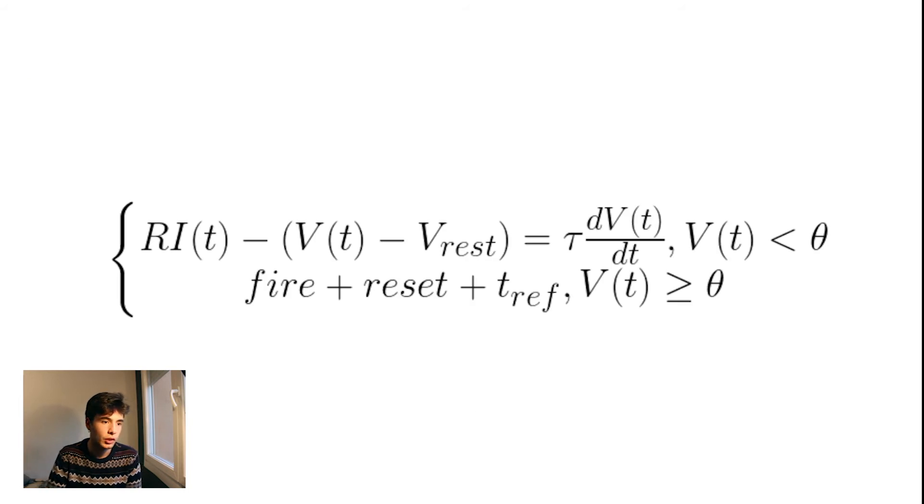Therefore, we're going to use this beautiful expression when the voltage V of T is less than the threshold, and when the voltage reaches the threshold, we're going to make this neuron spike, reset, and do nothing during the refractory time.